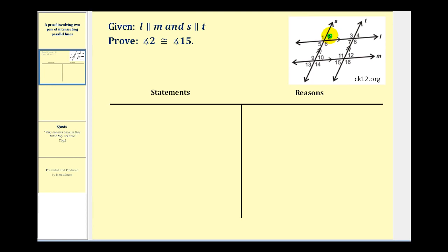Here's angle two and here is angle 15. Before we start, let's go ahead and see if we can devise a strategy for proving that angle two is congruent to angle 15.